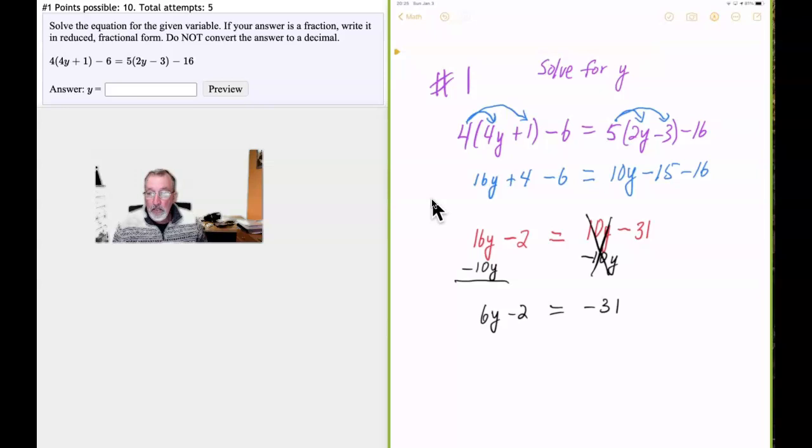So now we want to, can you already see where we're going with this? We're going to add 2 to both sides. So this one goes away. And we know then that 6y is equal to negative 31 plus 2. And so the signs are different. So we're going to take the difference between the two numbers. The difference between 31 and 2 is 29. And the sign on the number with the bigger absolute value, 31, is negative. So our answer will have a negative sign. So this will be minus 29.